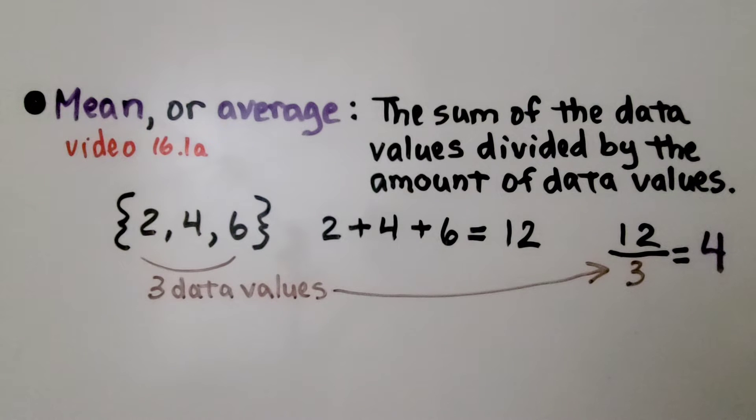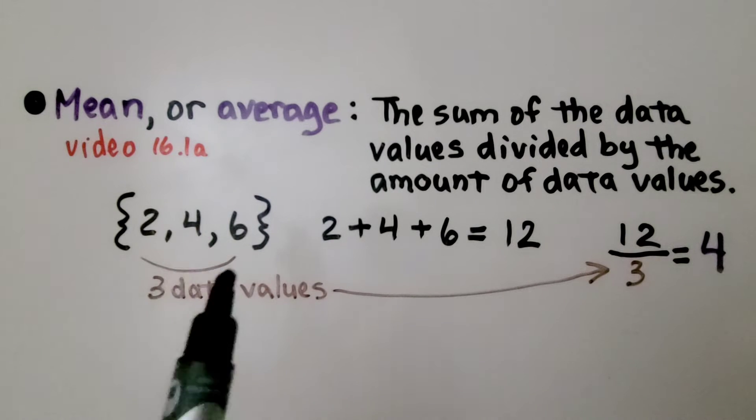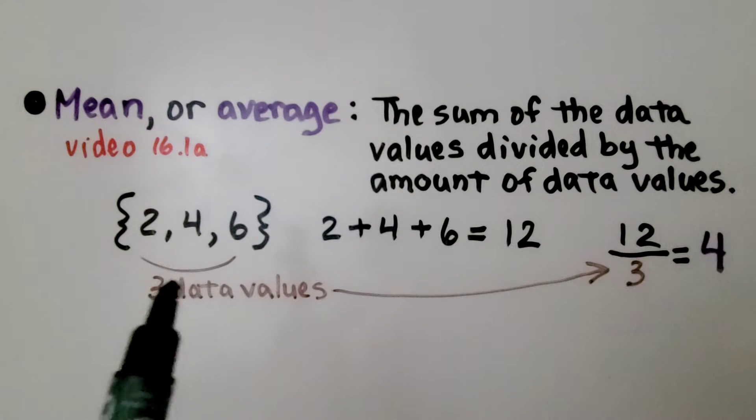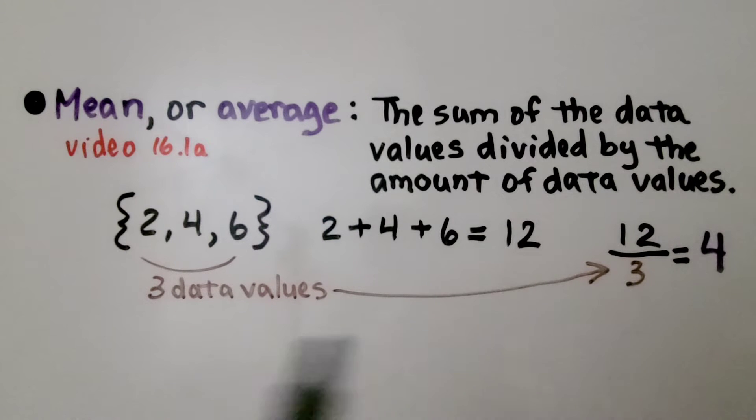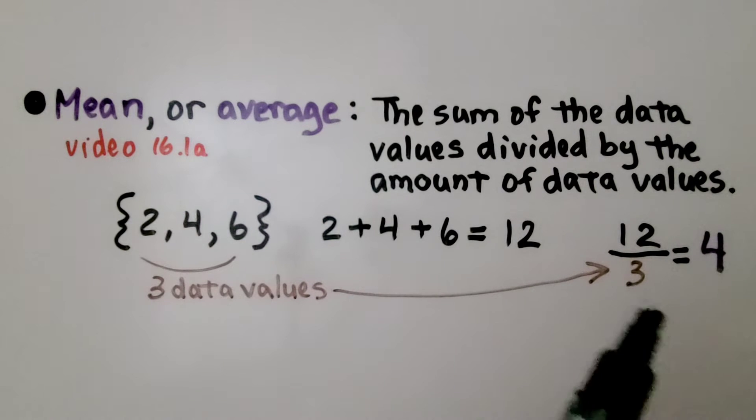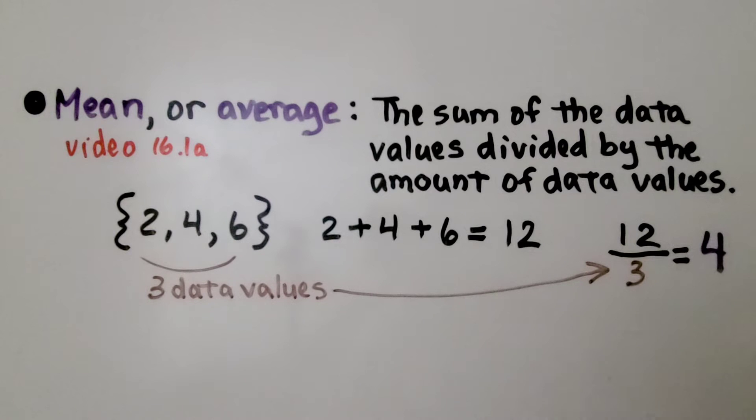It's very important for you to understand how to find a mean or an average in order to find a MAD. If we have these three data values in a set, we get their sum. 2 plus 4 plus 6 is 12. There's three data values, we divide it by that 3, and we know that the mean or average is 4.